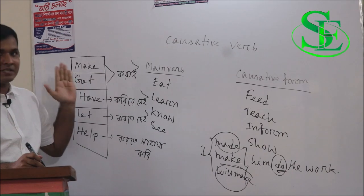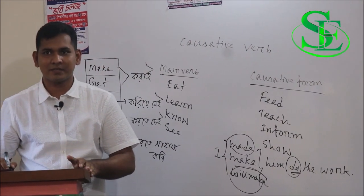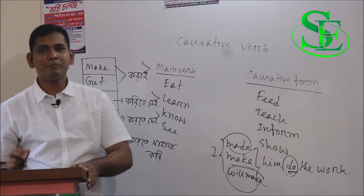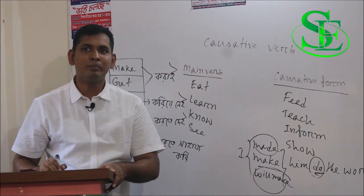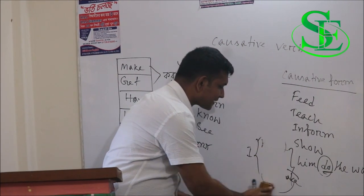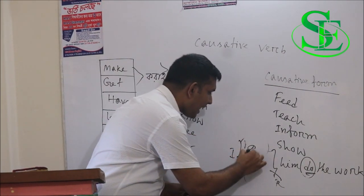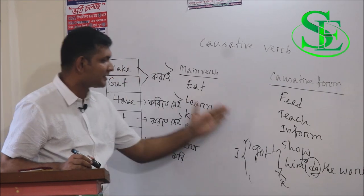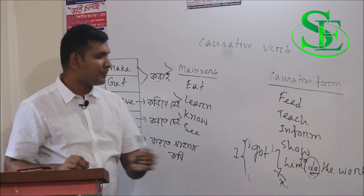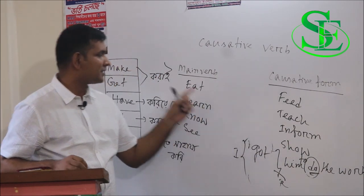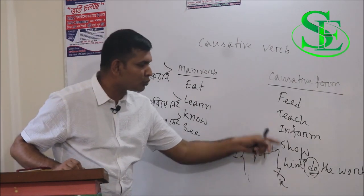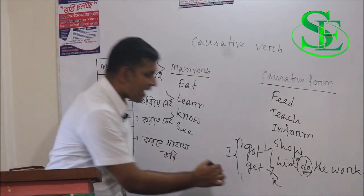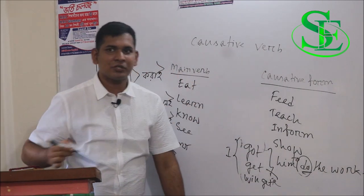Both 'make' and 'get' mean 'karai,' but there is a structural difference. When using 'make,' we use the main verb directly. But with 'get,' we must put an extra 'to' before the main verb. For example: 'I make him do the work' versus 'I got him to do the work.' Meaning-wise there is no difference, but structurally 'get' always requires 'to' before the main verb.